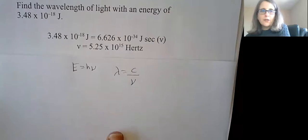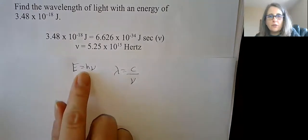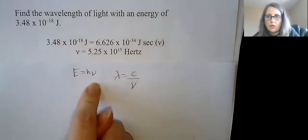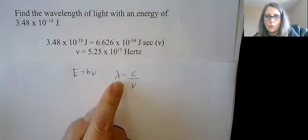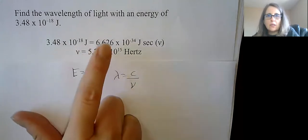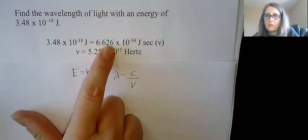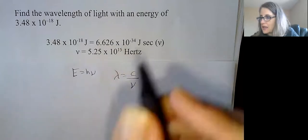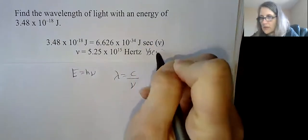The first step is to find your frequency, because I have energy, so I have a relationship between frequency and energy. I do not have a relationship between energy and wavelength, at least the way it's written at this point. So if I take my joules and divide it by my Planck's constant, I should get 5.25 times 10 to the 15th hertz, that's inverse seconds, same thing.